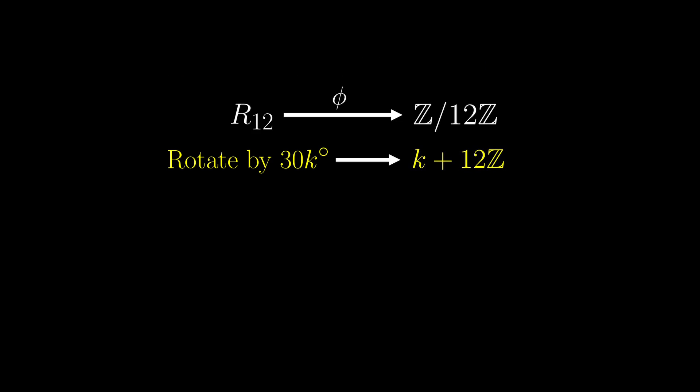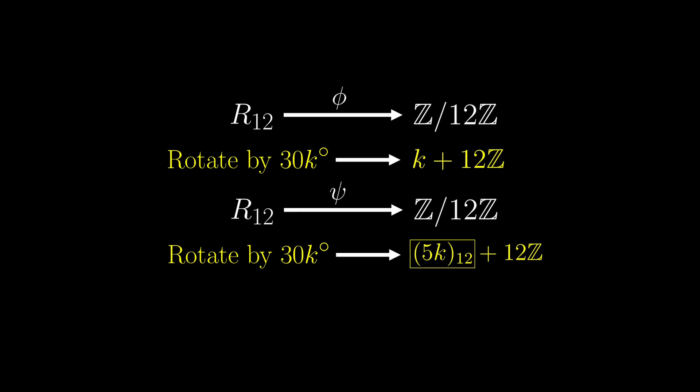However, this is not the only isomorphism that you can have. For example, this similar-looking function is also an isomorphism. This notation here is not really a standard one, but it means the remainder of 5k when divided by 12. You should check that this function is a homomorphism as well as a one-to-one function in order to show it is an isomorphism. The difficult part is to show that this function psi is one-to-one, but we will skip this for this video.